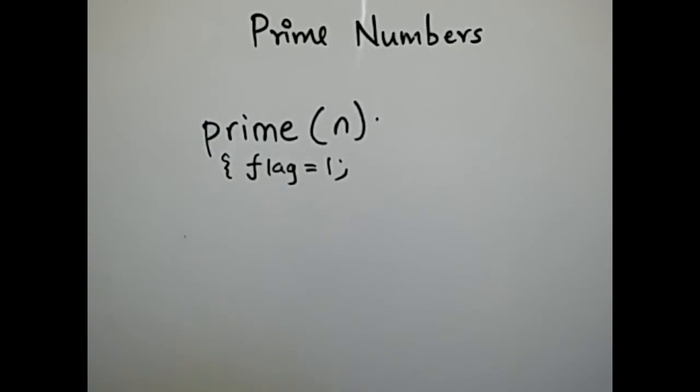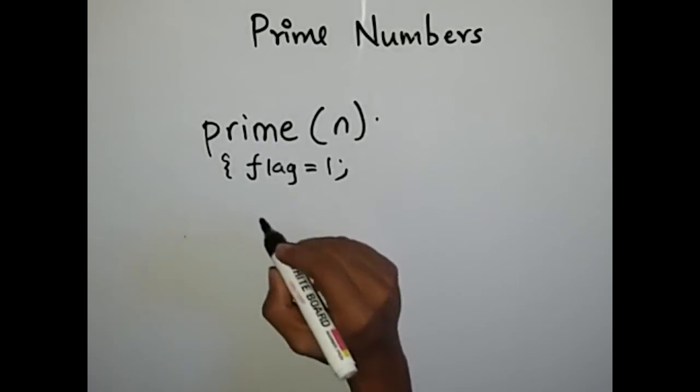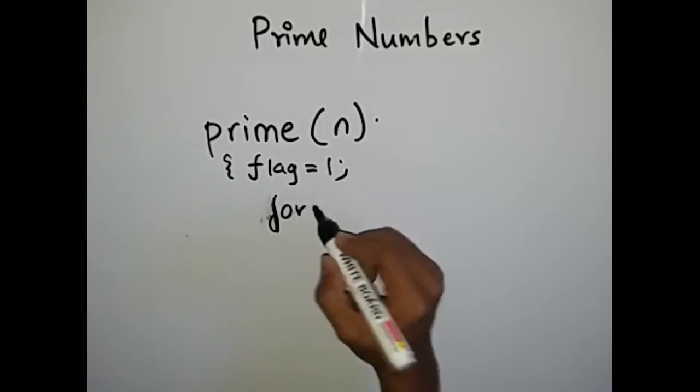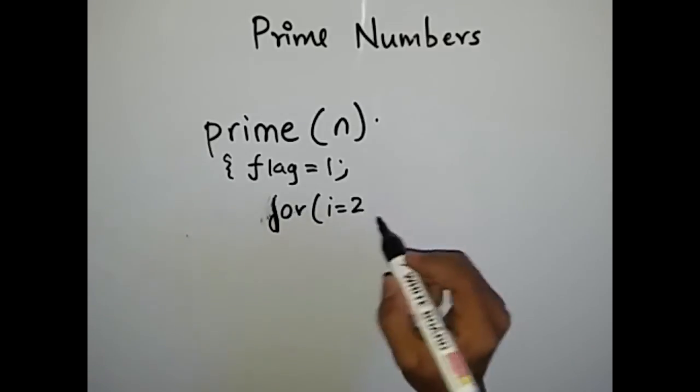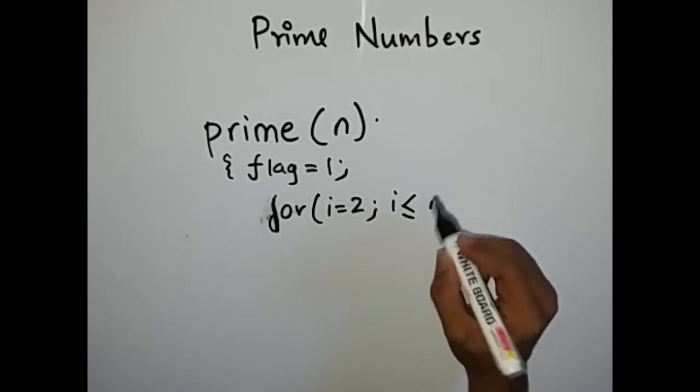This flag equal to 1 indicates that the number is prime number. So what we will do in this problem is take a for loop. For i is equal to 2, i less than equal to n minus 1.